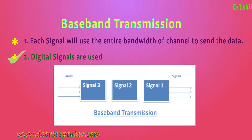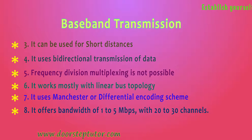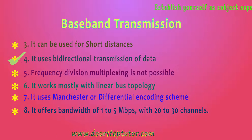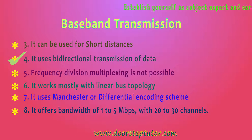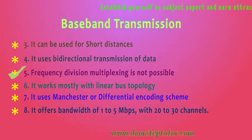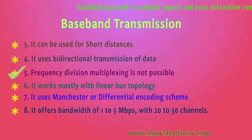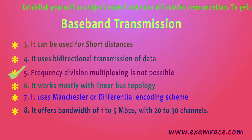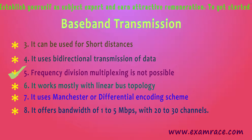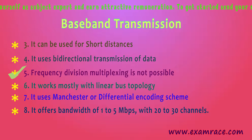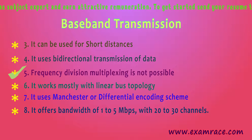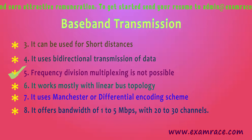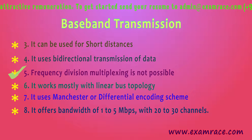The different characteristics of baseband transmission are: it can be used for short distances; it uses bi-directional transmission of data; and frequency division multiplexing is not possible. The reason is that the entire bandwidth is used by only one signal at a time. Frequency division multiplexing would require multiple signals sharing frequencies simultaneously, but since one signal occupies the entire bandwidth at a time, FDM is not possible in this case.